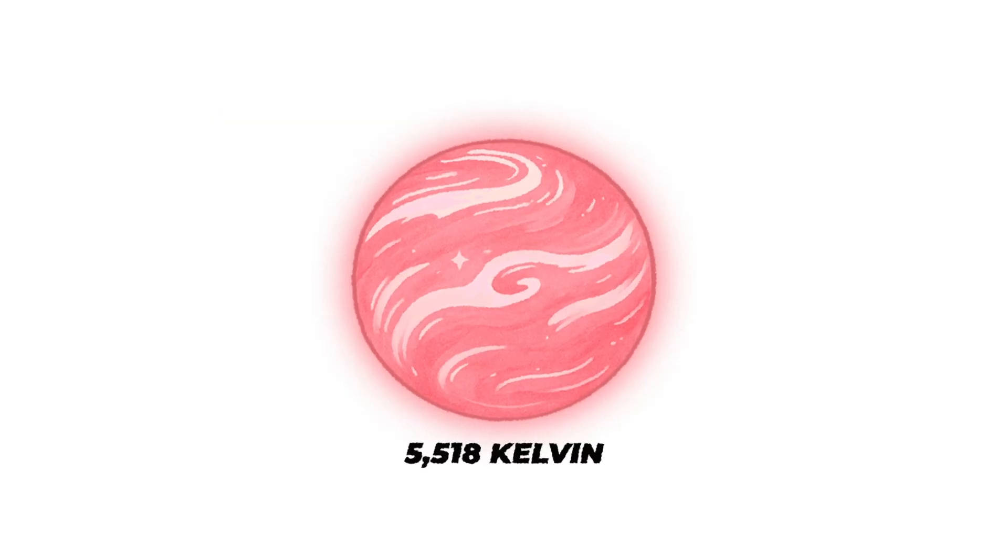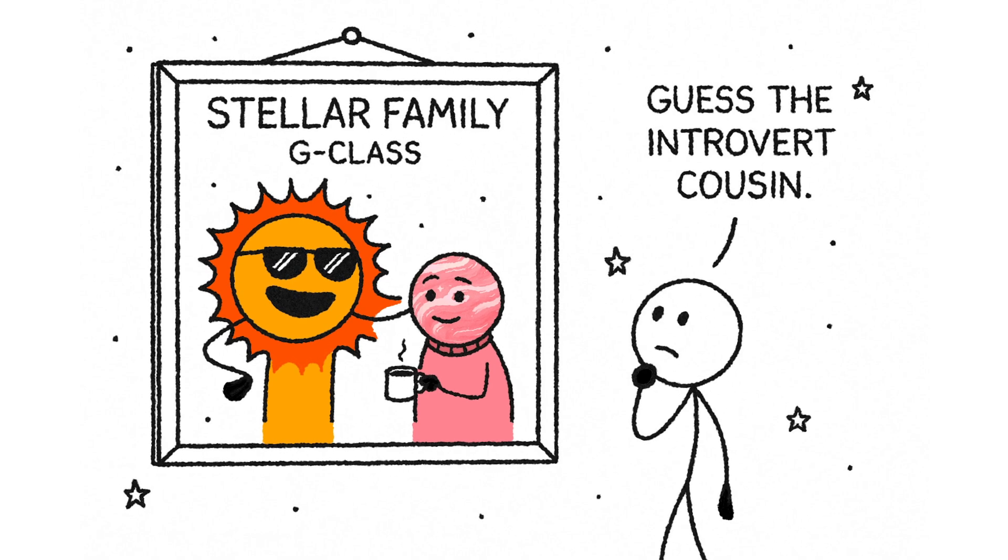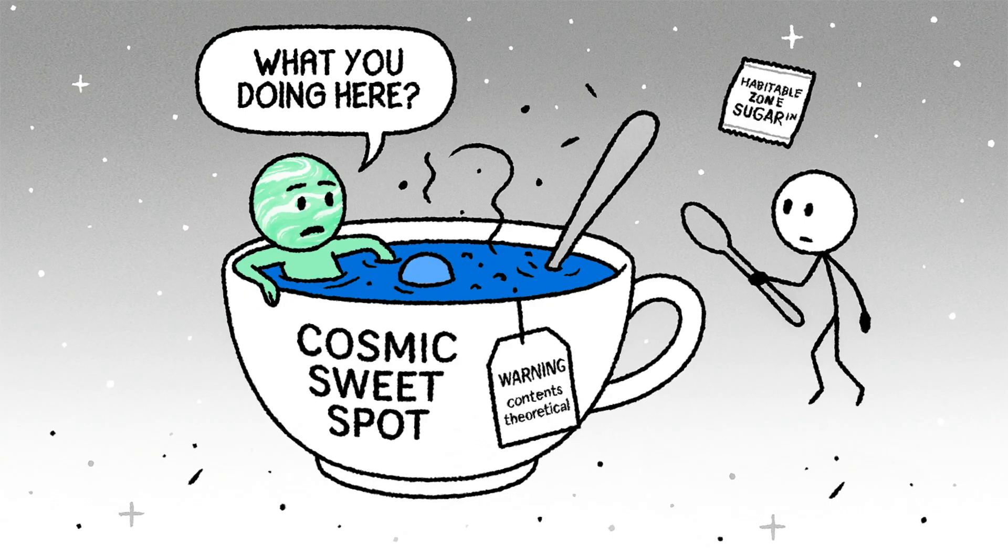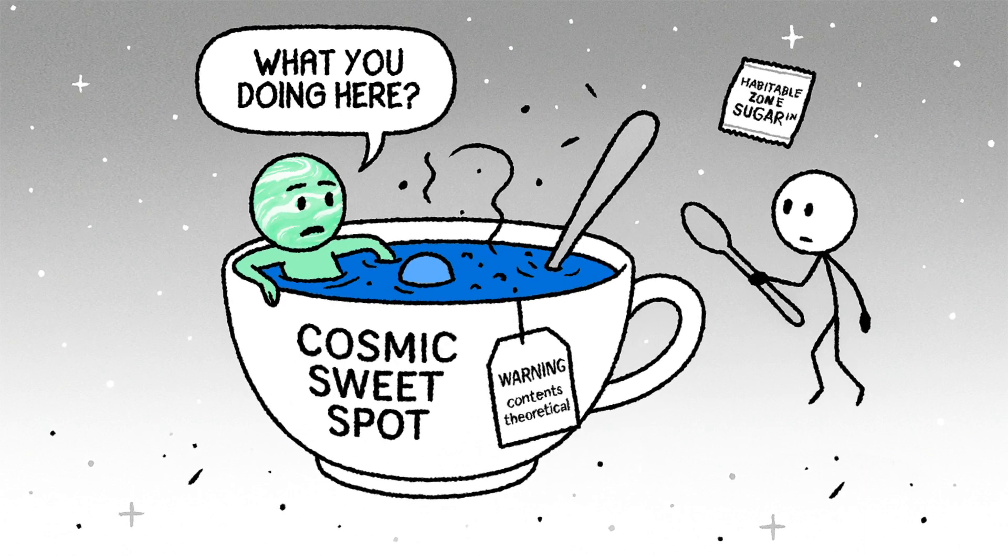Its surface temperature sits around 5,518 Kelvin, and it shines at about 79% of the sun's brightness. Think of it as the sun's slightly dimmer, more chill cousin. Still, it places Kepler-22b in the cosmic sweet spot where life could exist, at least in theory.